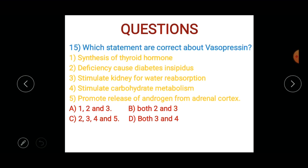Which statements are correct about vasopressin? Statements given: 1) synthesis of thyroid hormone, 2) deficiency causes diabetes insipidus, 3) stimulates kidney for water reabsorption, 4) stimulates carbohydrate metabolism, 5) promotes release of androgen from adrenal cortex. Options: one two and three, both two and three, two three four and five, or both three and four.